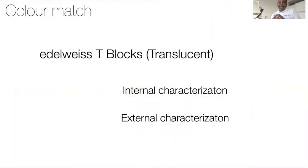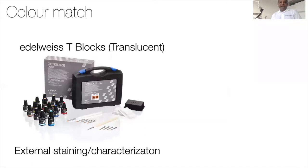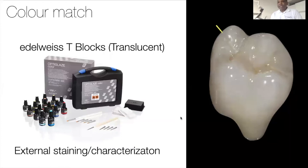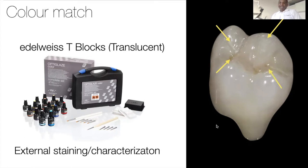This can be done through internal or external characterization. With external characterization, any external resin stains can be used — for example, OptiGlaze can be applied to obtain a whitening effect or a mottled effect in the fissures. If you want pits to be a little darker yellow or fissures to be darkened, or the neck of the tooth to have a darker shade, that can be easily painted on and light cured.